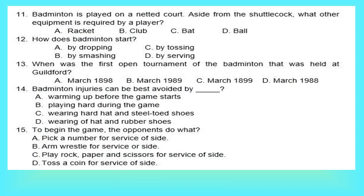11. Badminton is played on a netted court. Aside from the shuttlecock, what other equipment is required by a player? A. Racket. B. Club. C. Bat. D. Ball. 12. How does badminton start? A. By dropping. B. By smashing. C. By tossing. D. By serving.